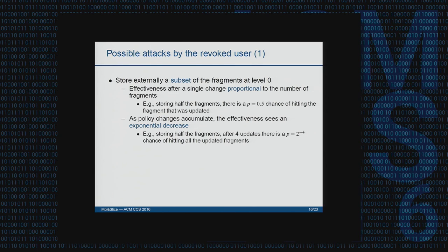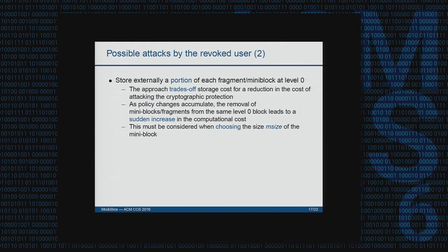A revoked user may try to mitigate revocation by storing a copy of some fragments, hoping to guess which fragment will be replaced. But this is not a very convenient attack: the probability of success is proportional to the storage dedicated to local fragment copies, and as policy updates accumulate the effectiveness becomes very low. Another option is for the user to keep portions of mini blocks so the computational cost of attacking the system is smaller, but this is still typically very expensive. It can be mitigated by choosing a larger mini block size.